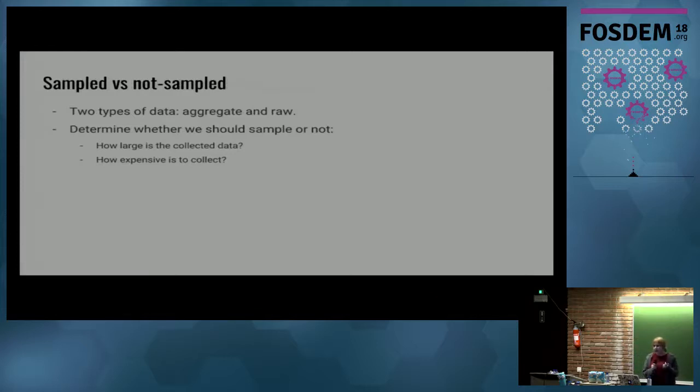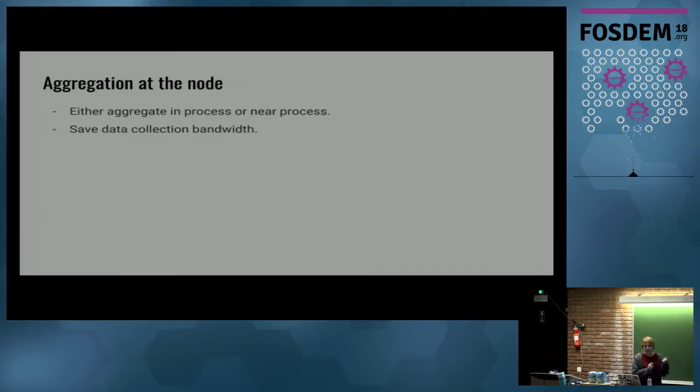We sample expensive and large data. Everything that is cheap to collect and aggregatable doesn't have to be sampled. Examples of sampled signals are traces, for example, because they are large. Profiles because they are expensive. On the other hand, we may aggregate in efficient ways and produce cheap and small data to avoid sampling. This is what we do for metric collection, for example. We don't have to sample metrics at all. It is great because then you can see your 99th percentile.